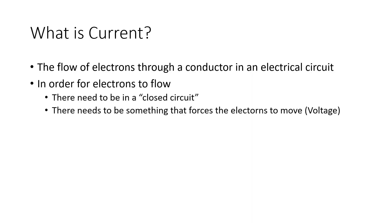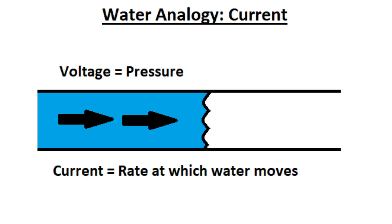First, they need to be in a closed circuit — a circuit that has both a power source that is positively charged and somewhere for the electrons to flow to, that is negatively charged within the circuit. If the circuit is open, or in other words has nowhere for electrons to flow to, the electrons cannot move. Also, in order for electrons to flow, there needs to be something that forces them to move. This force or pressure is the voltage in an electrical circuit.